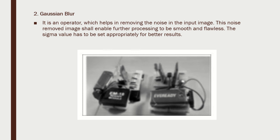The second step is to apply Gaussian blur. This operator helps tremendously in removing noise from the input image. Noise removal is very important because only when the noise is removed can the image be processed further, and for the entire process to be flawless this operator must be used. The Gaussian blur has to be applied to the grayscale image.